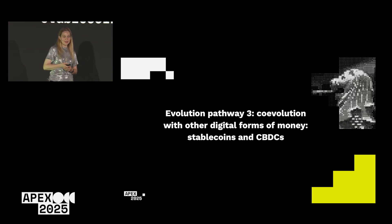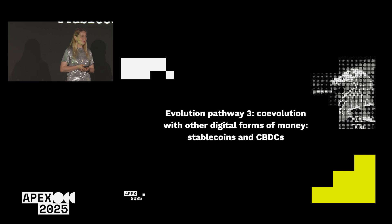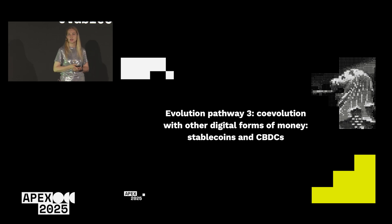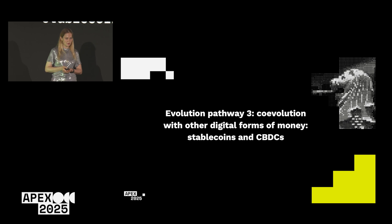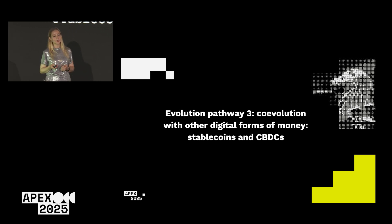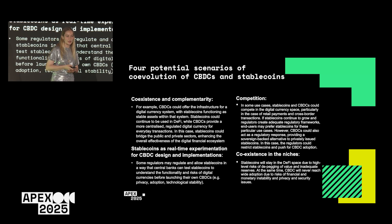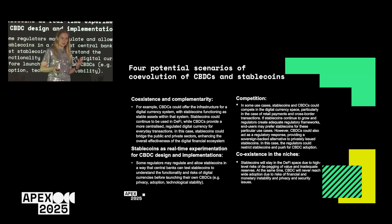The last pathway is co-evolution with other types of digital assets, specifically digital money from central banks — CBDCs. We don't have any example on a global level at the moment, but many central banks are researching this area and we already have three cases of CBDCs launched. Stablecoin is essentially digital money from the private sector, while CBDC is digital money from the public sector issued by the central bank. In the future they can compete, co-evolve and complement each other, or stay in their own niches and satisfy particular needs.